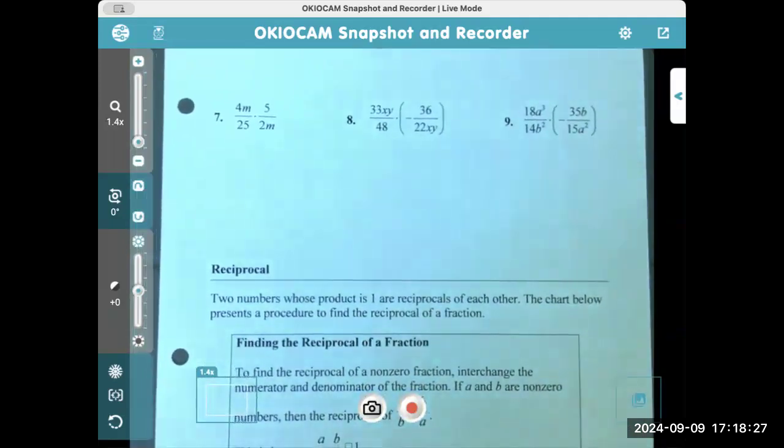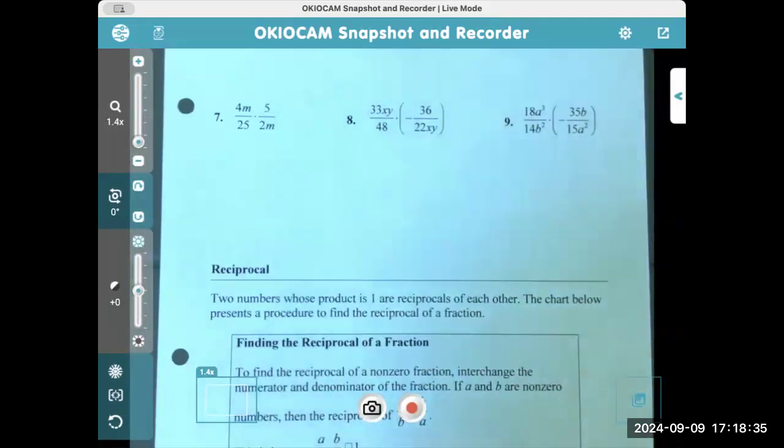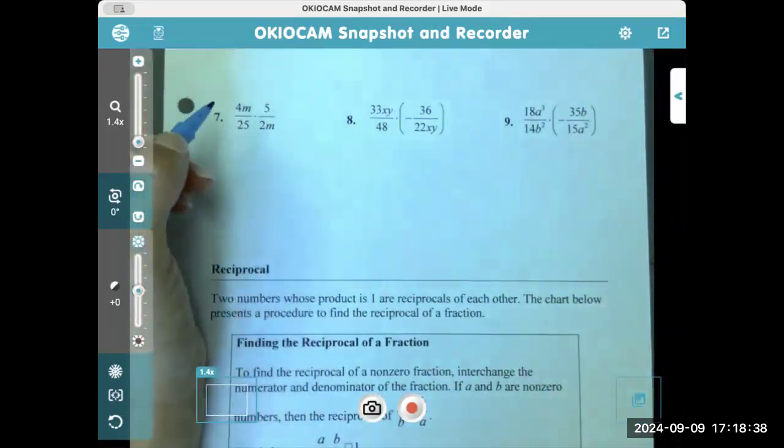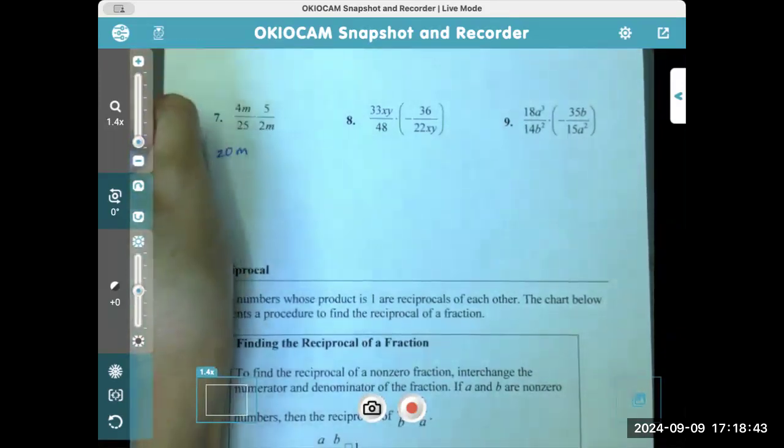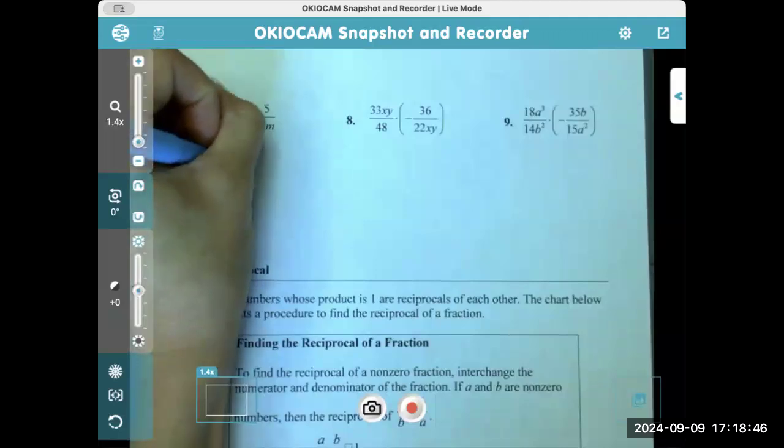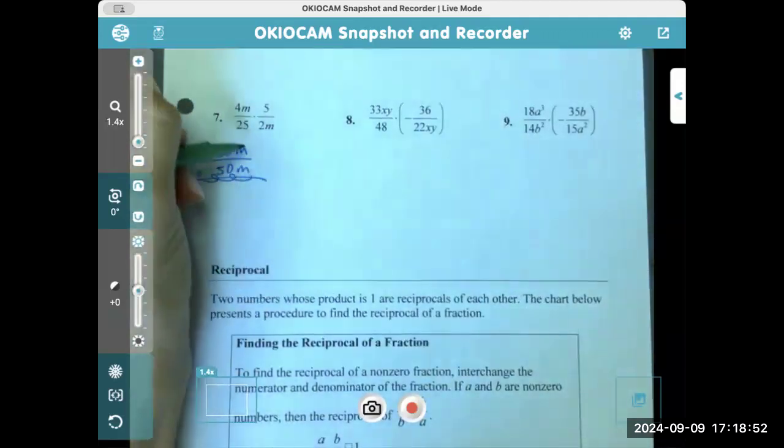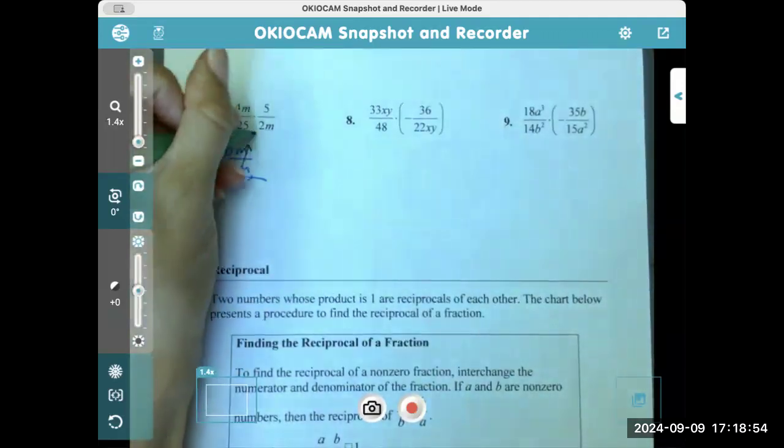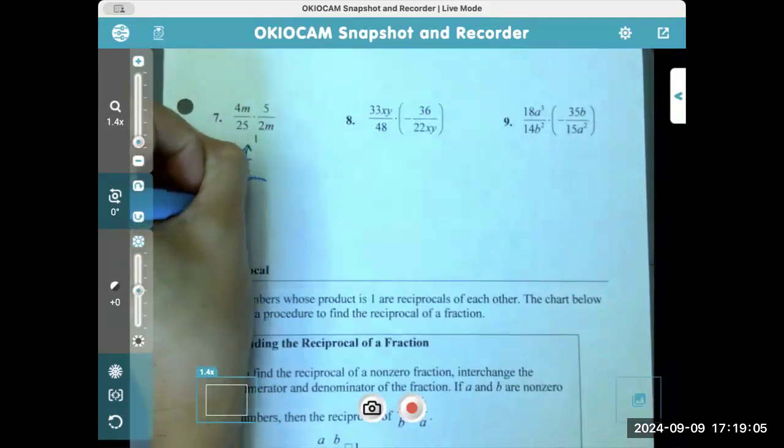Here, we have four m over 25 times five over two m. If we just go straight into multiplying across, you multiply just the numbers with numbers and the letters with letters, if they're like letters, so that would be 20 m over 50 m. And what's anything over itself when we're looking at these m's? Just one. And these can both be reduced by 10. So that just becomes a two and five. There we go, just two fifths. Yay.